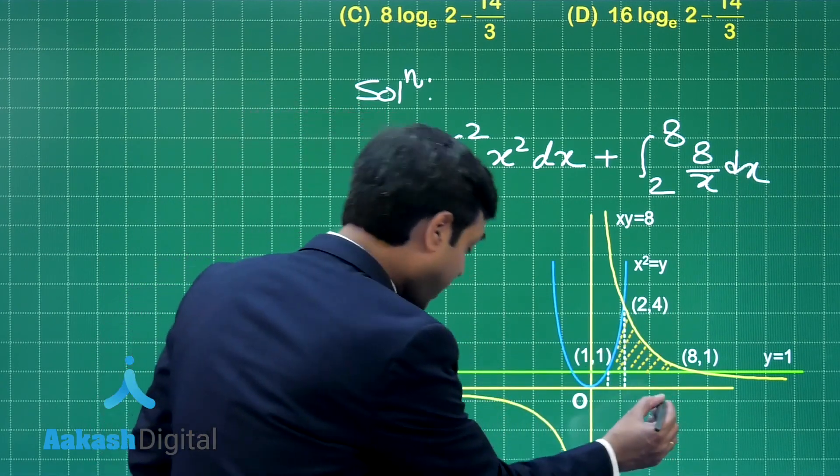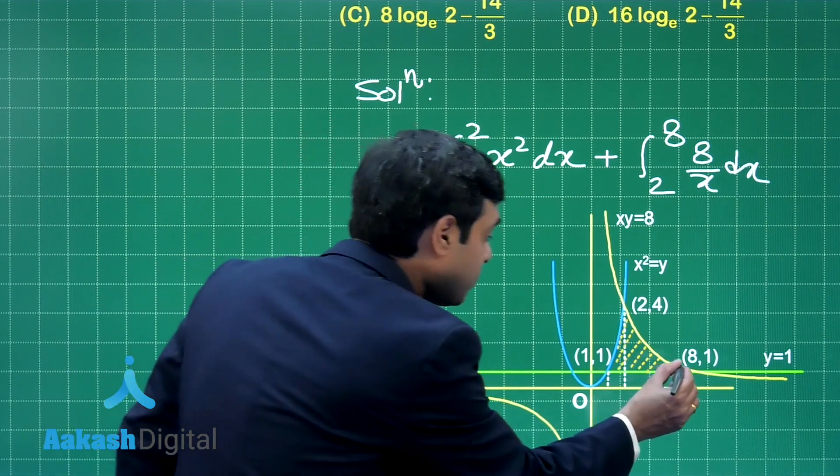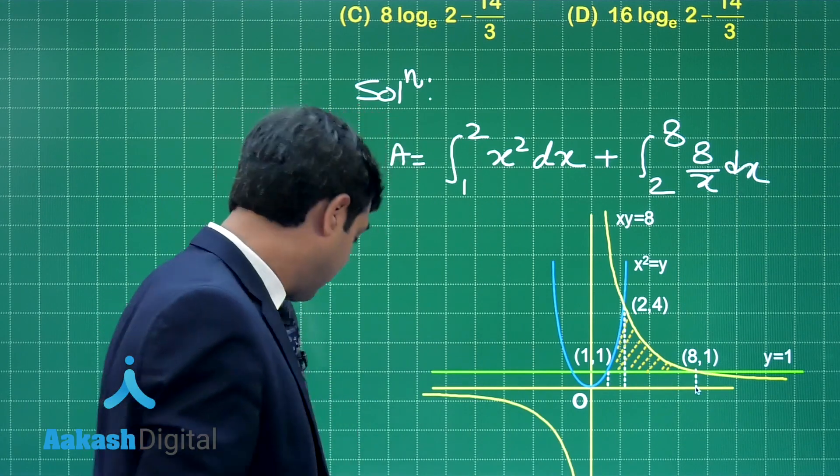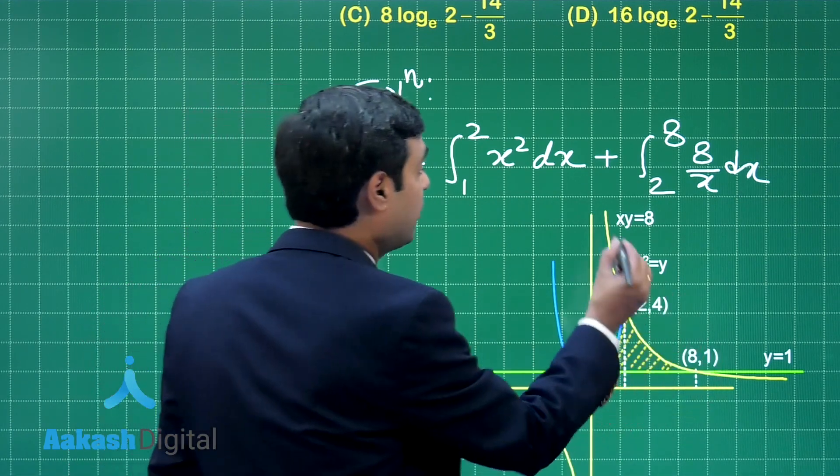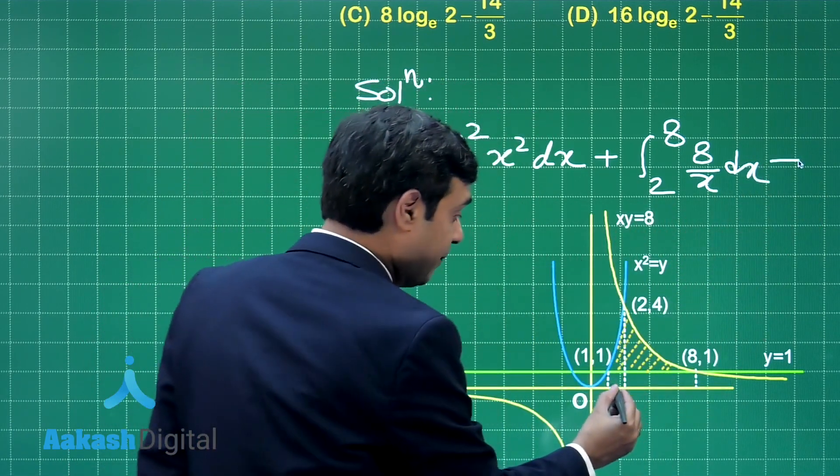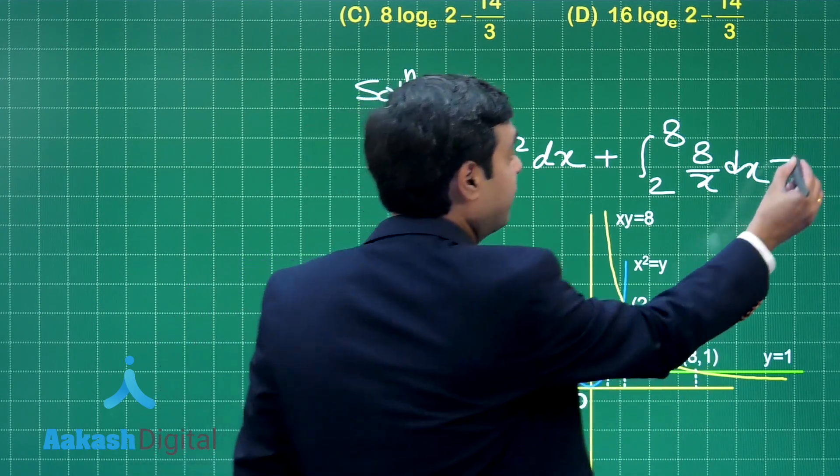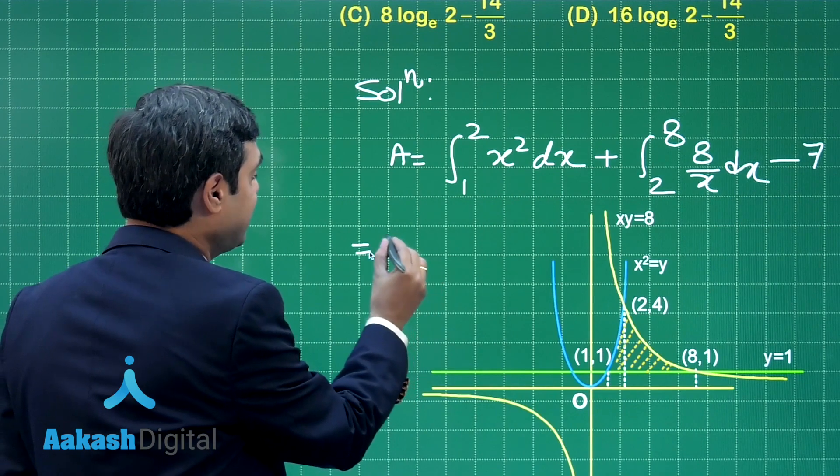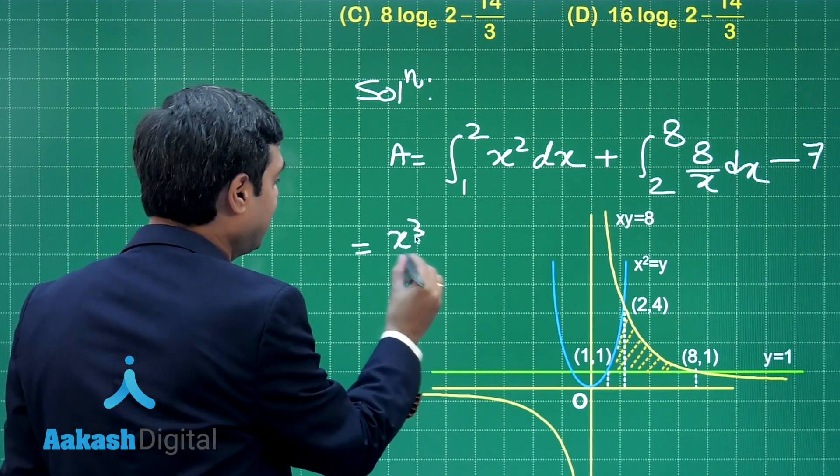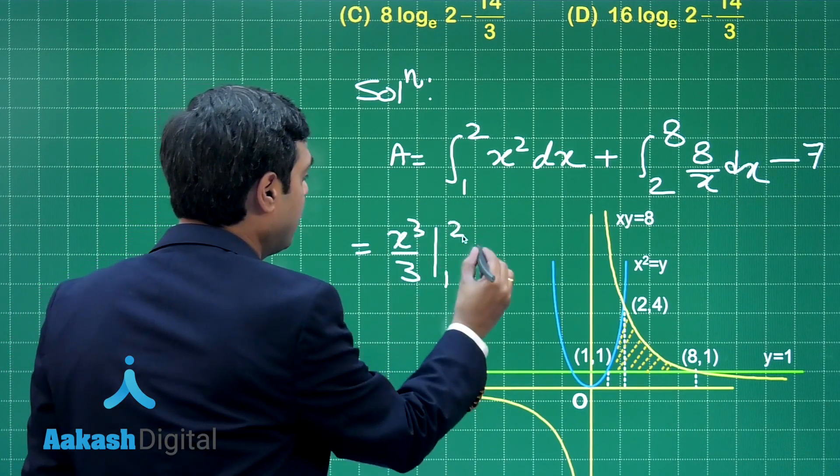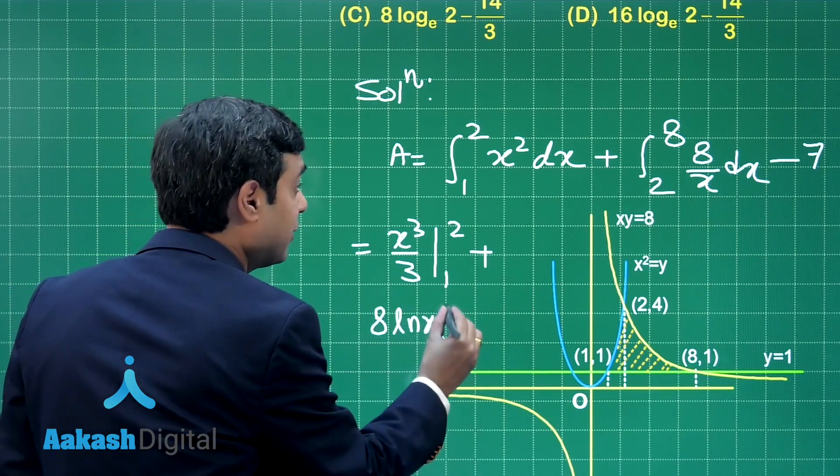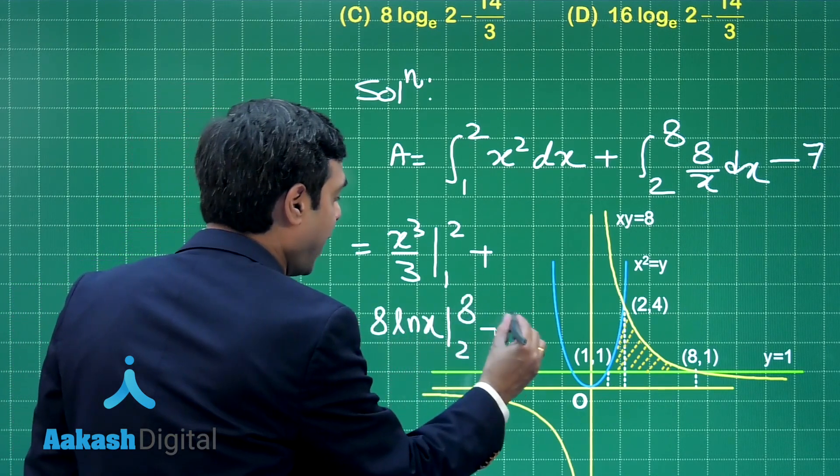You also require to find this point, so that you can subtract the rectangular portion. Right. So, let us subtract the rectangular portion here minus. This is 7 multiplied with 1 minus 7. Right. Now, integrating we can say this is x cube by 3, 1 to 2 plus 8 log x 2 to 8 minus 7.